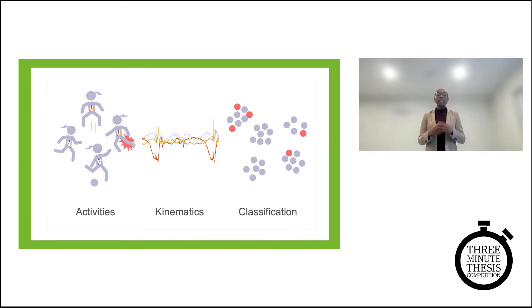This kinematic information can be used to identify what activity is happening at a given moment. I will train a machine learning algorithm to recognize different activities based on this kinematic data. Essentially, I will train a computer to think like a coach or a spectator, and to recognize whether a player is jogging or sprinting, for example, based on sensor data.